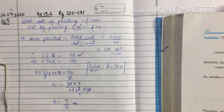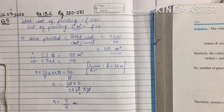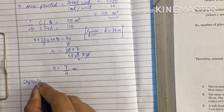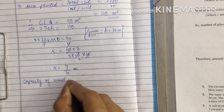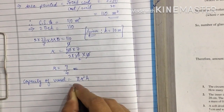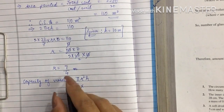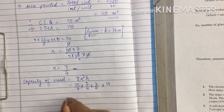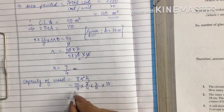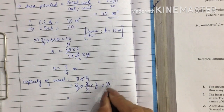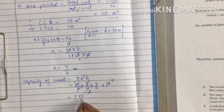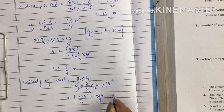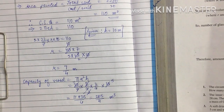r comes out to be 7 by 4 meters. This is the answer for the second part. In the third part we find the capacity of the vessel using the formula V = πr²h. r² means (7/4)², so 7/4 × 7/4 × height 10. Simplifying, we get 11 × 35 by 4, which is 385 by 4 meter cube.